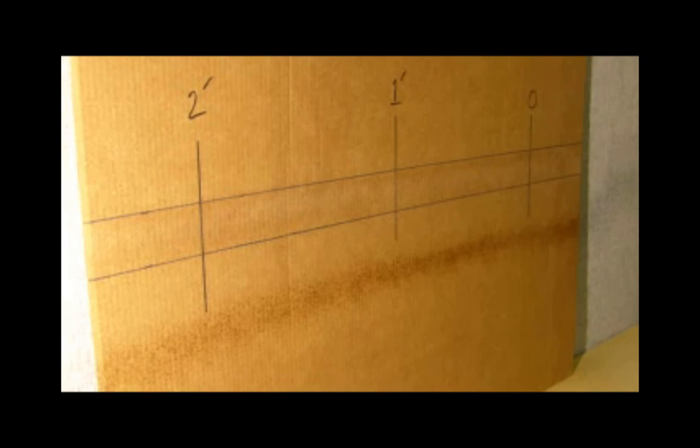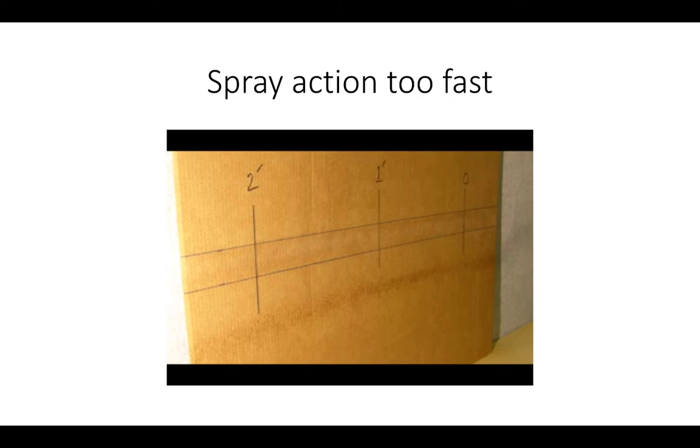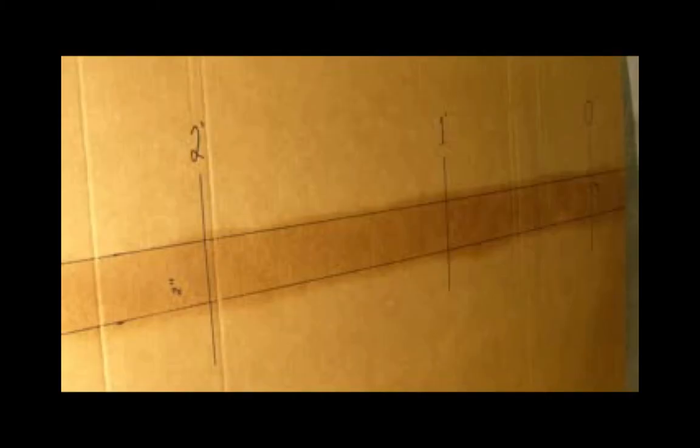Moving the spray gun across the target surface too quickly will result in a spray barrier that has gaps or fewer spores overall. This can reduce the efficacy of Apprehend as bed bugs crossing the barrier will pick up fewer spores.